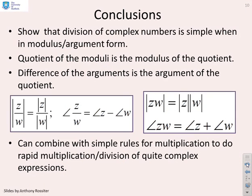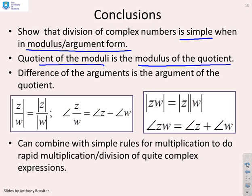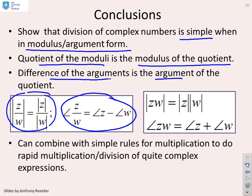In conclusion, the division of complex numbers is simple when done in modulus-argument form. The quotient of the moduli is the modulus of the quotient, and the difference of the arguments is the argument of the quotient. Combined with the simple rules for multiplication from the previous video, you can do very rapid multiplication and division of quite complex expressions.